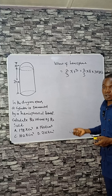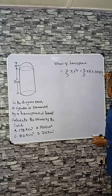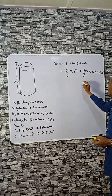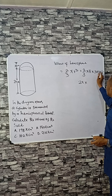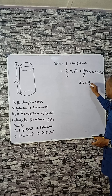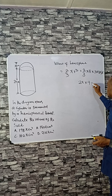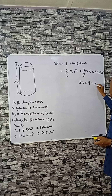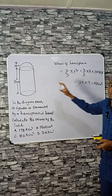Using a calculator, we can simplify: 2 pi times 3 times 3 is 9, and 2 times 9 is 18. That gives us 18 pi cm cubed, which is the volume of the hemisphere.